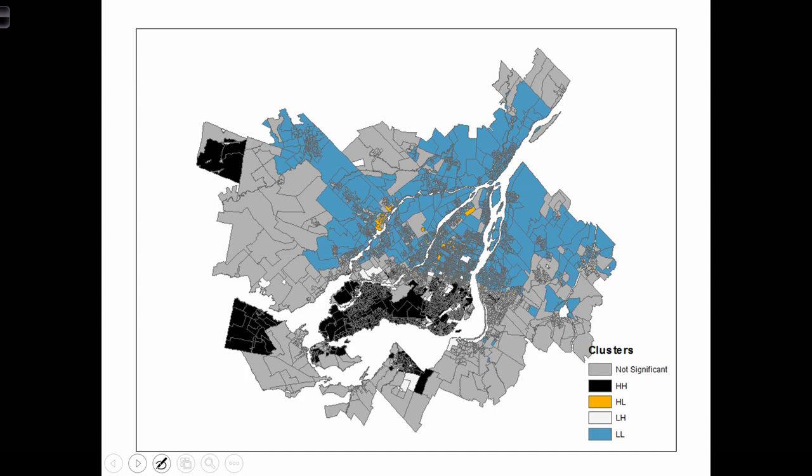When we compute the local Moran's I, we usually output the data using a choropleth map, indicating the type of cluster at each location in the map. The gray areas on the map are locations where there's no significant spatial pattern.